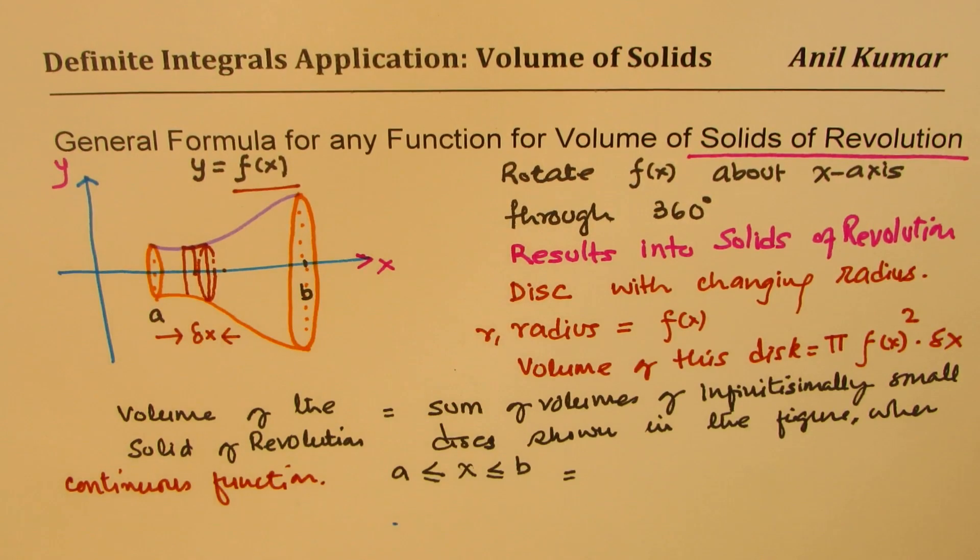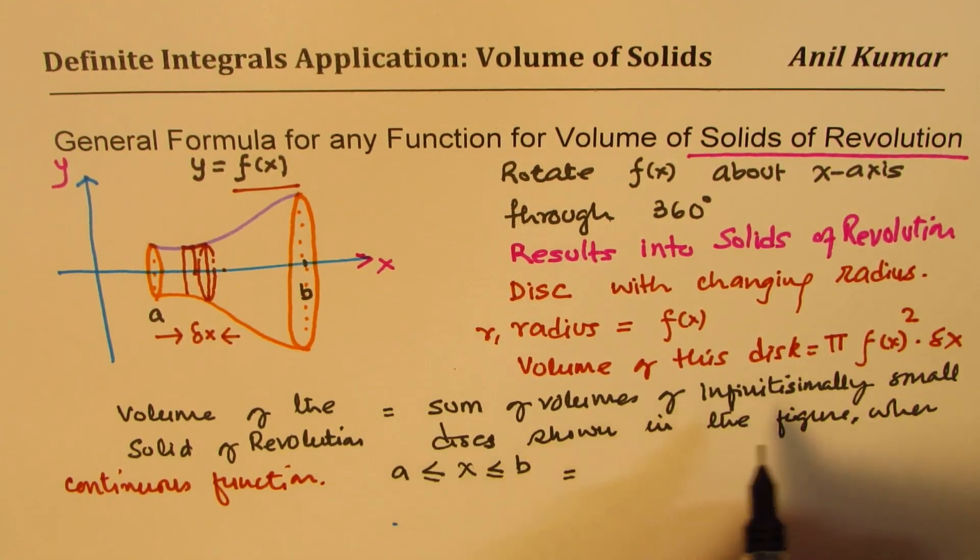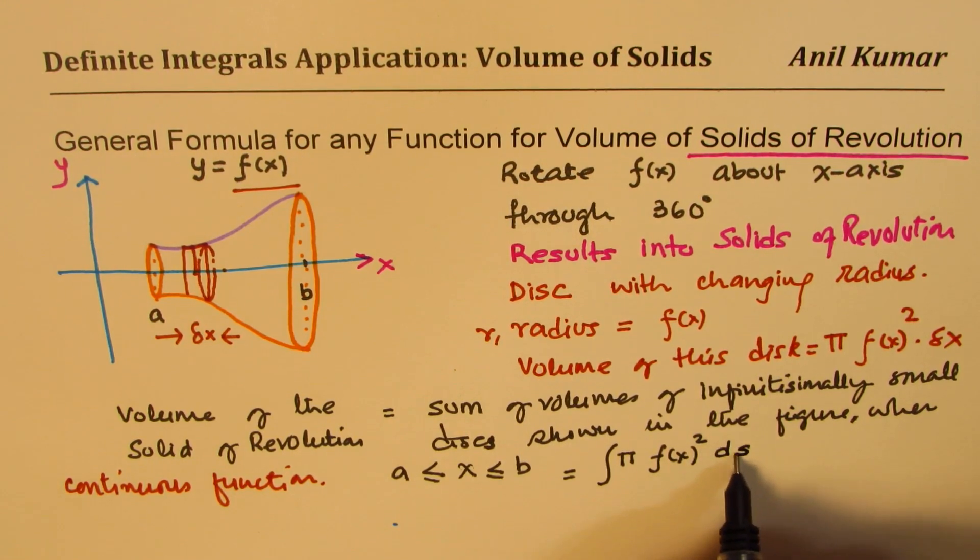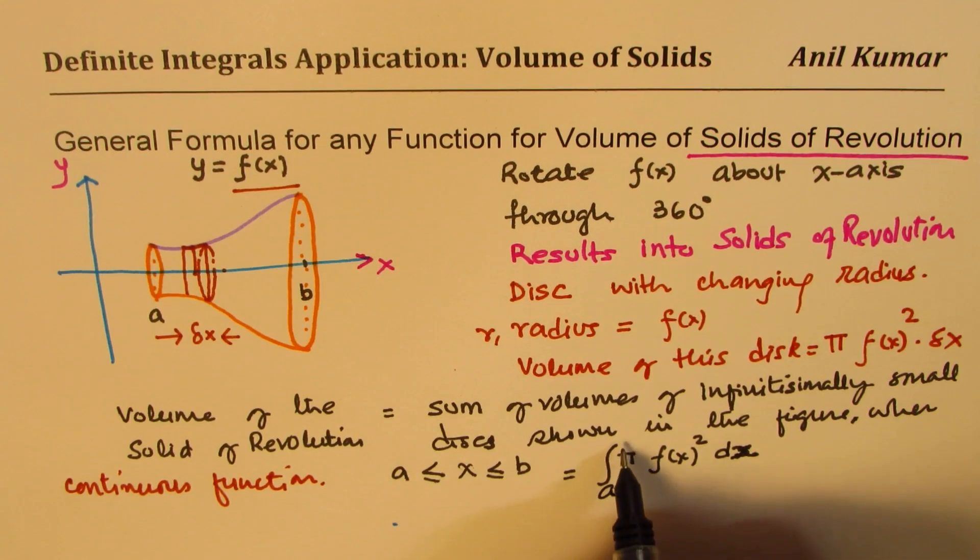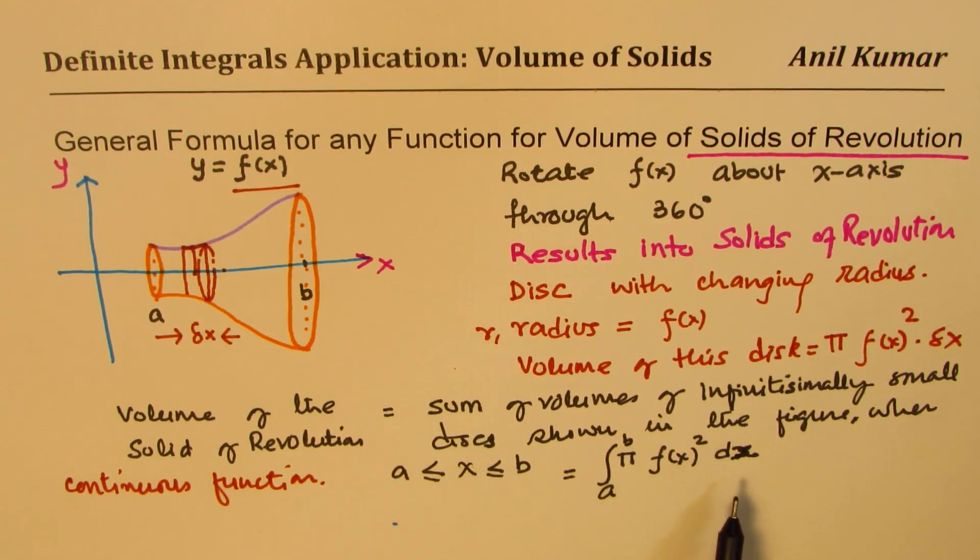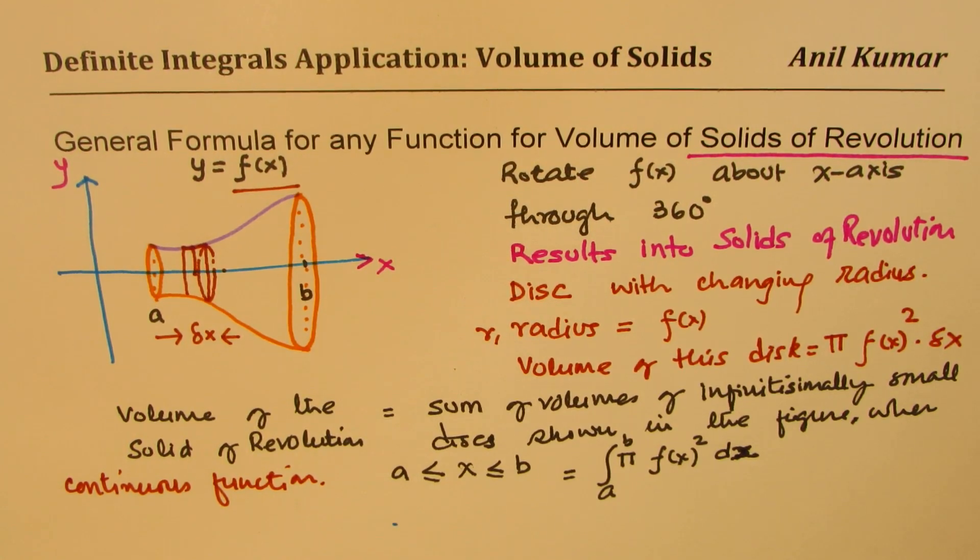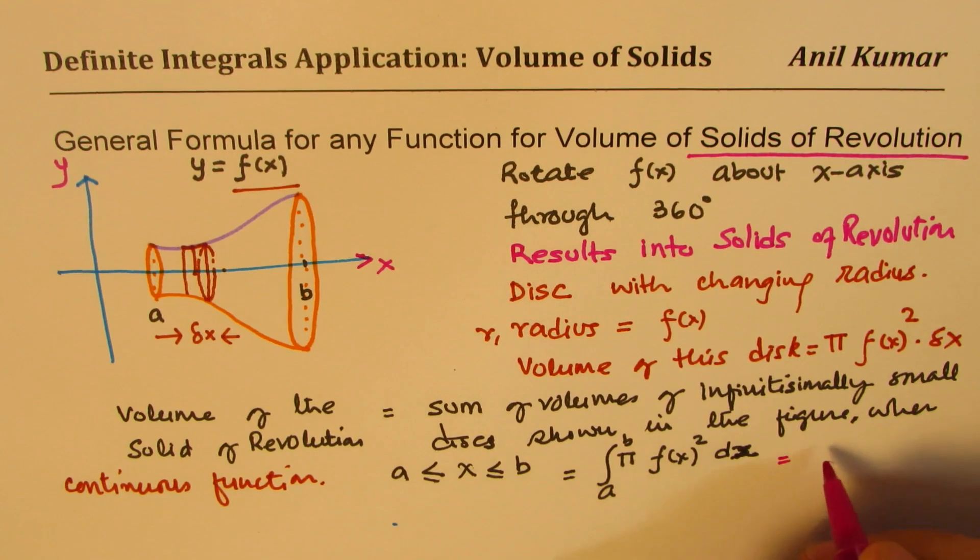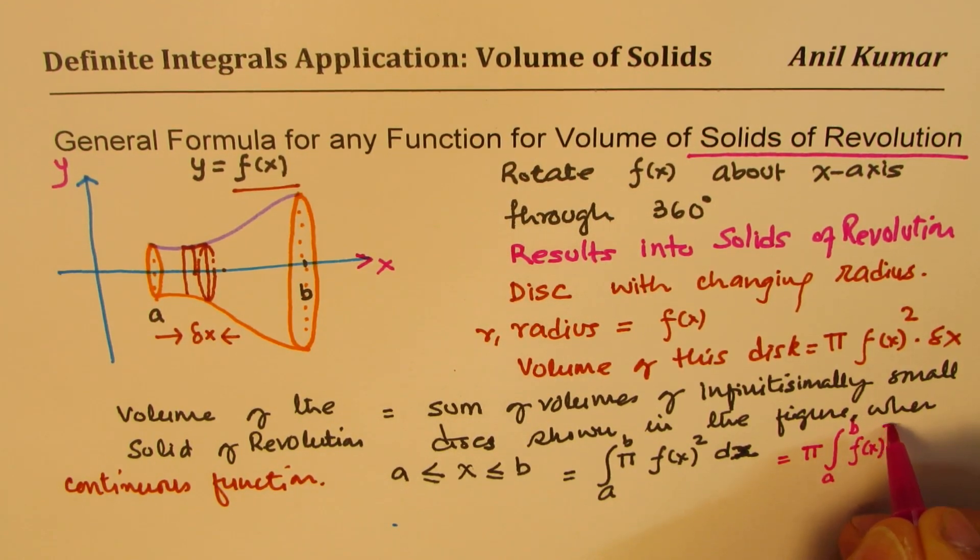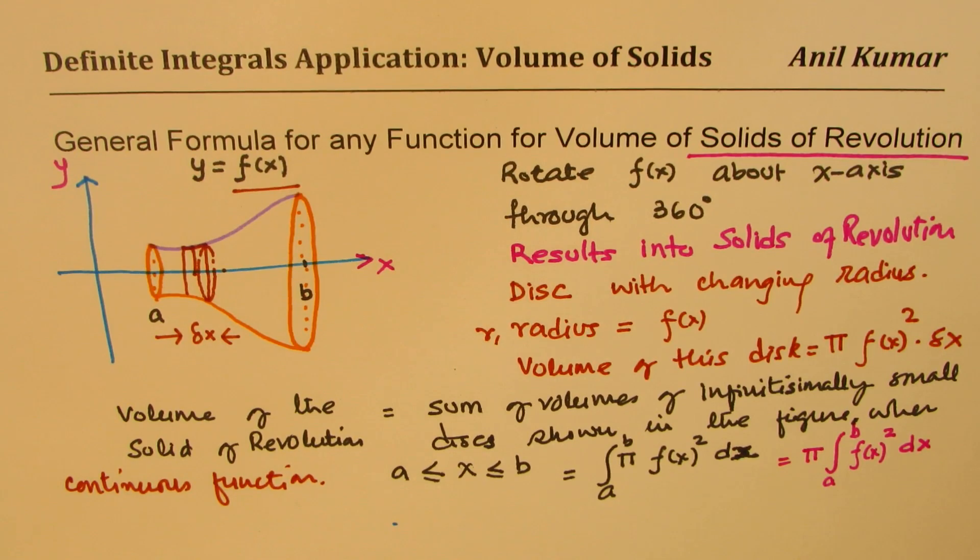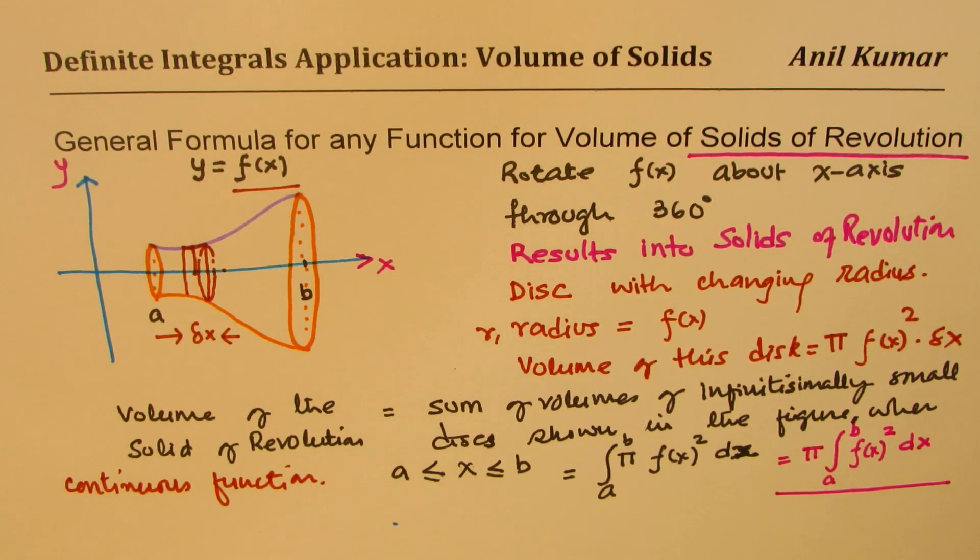So that sum of a continuous graph, using the concepts of integration, which is the integral of all this, which is pi f of x whole square dx, where the interval is from a to b. That gives you the formula to find volume of any solid of revolution. Pi is a constant so we can take pi outside: integral from a to b of the function f of x squared with respect to dx.